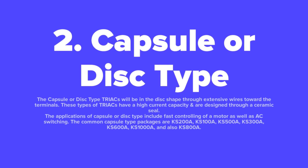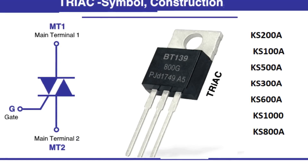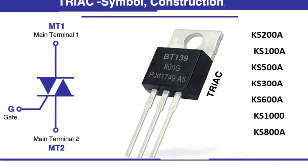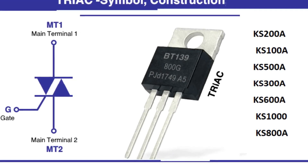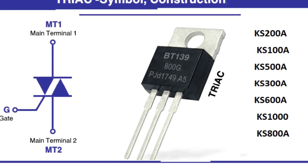The capsule or disc type TRIACs are disc-shaped with extensive wires toward the terminals. These types have a high current capacity and are designed with a ceramic seal. Applications include fast controlling of a motor as well as AC switching. Common capsule type packages include KS-200A, KS-100A, KS-500A, KS-300A, KS-600A, KS-1000A, and KS-800A.